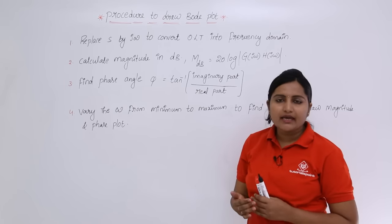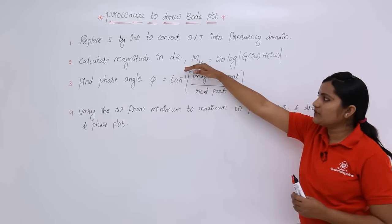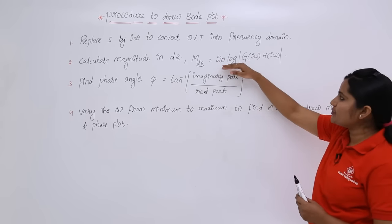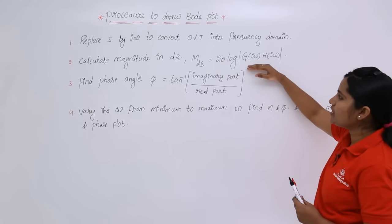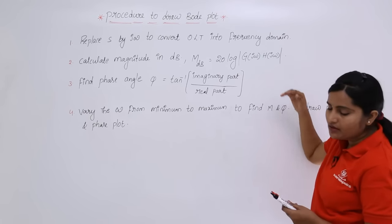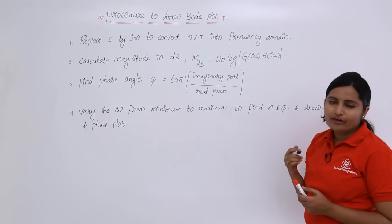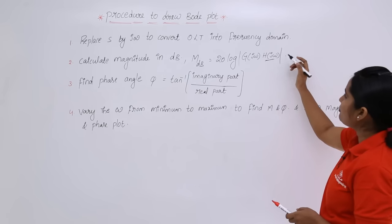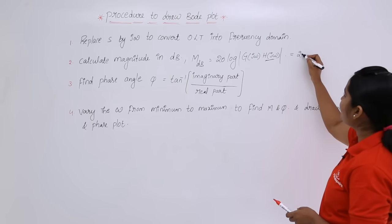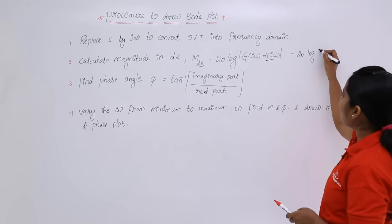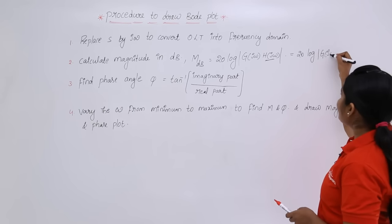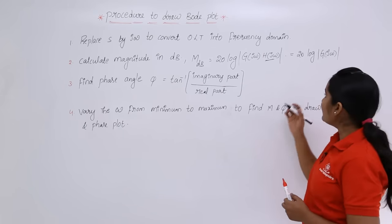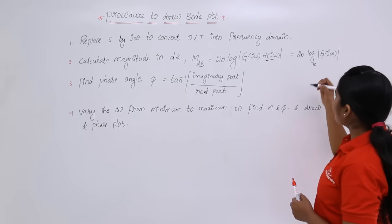The formula to calculate magnitude in dB is: M(dB) = 20 log|G(jω) · H(jω)|. For unity feedback systems, H(jω) = 1, so the formula simplifies to M(dB) = 20 log|G(jω)|. The base of the logarithm is always 10.